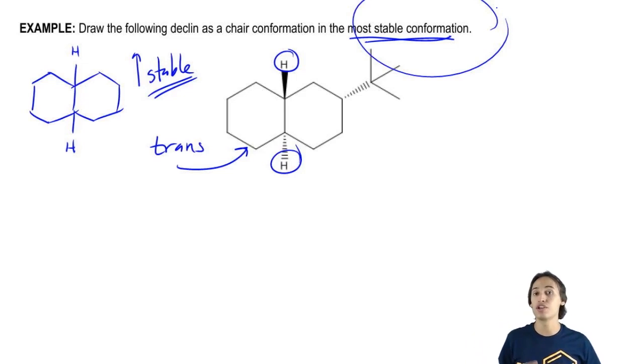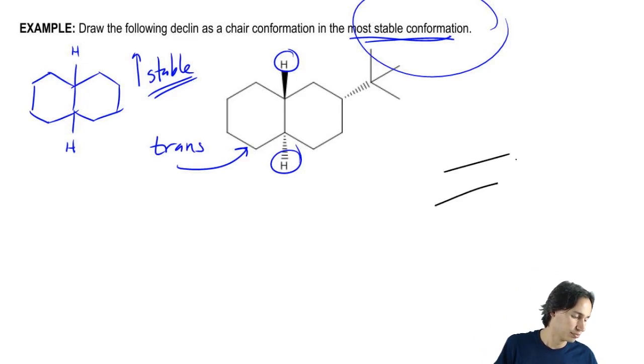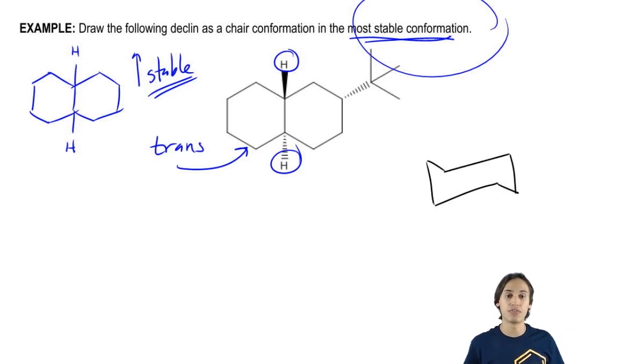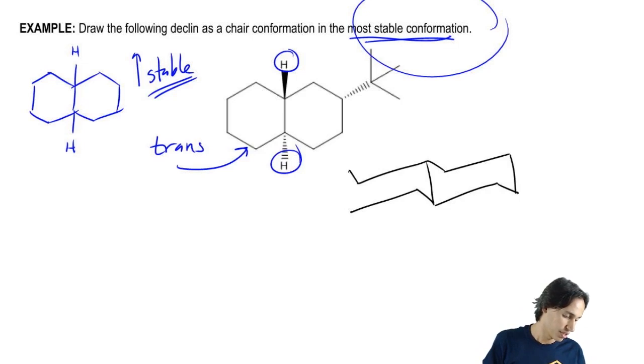So now we've got that settled. Let's go ahead and draw our trans decalin. What that's going to look like – and this is one of the hardest parts about it, just being able to draw it – you draw your chair conformation like normal. So I'm going to do this, I'm going to do that. Then what you do is you draw another chair coming directly off of that one. So I'm going to draw another stick coming off like that and then I'm just going to make the dip on the other side. So I'm going to do this and this and that.